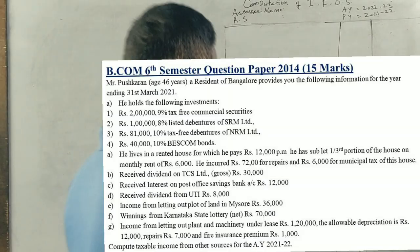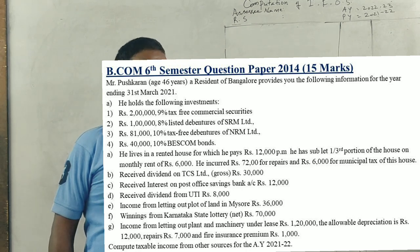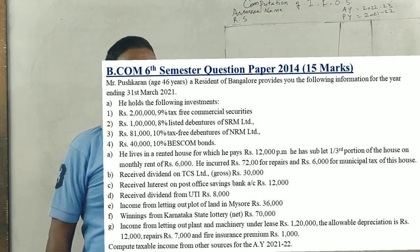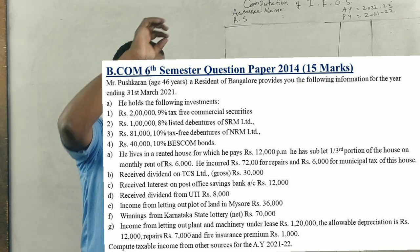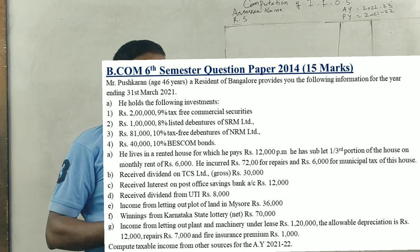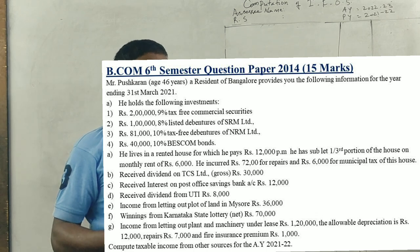This is a 2013 question paper, 15 marks. Mr. Pushkar, resident of Bangalore, provides the following information. He holds the following investments: 2 lakh rupees 9% tax-free commercial security.